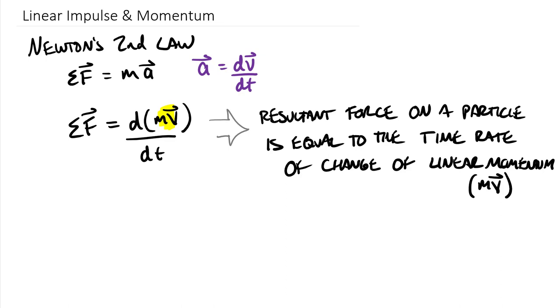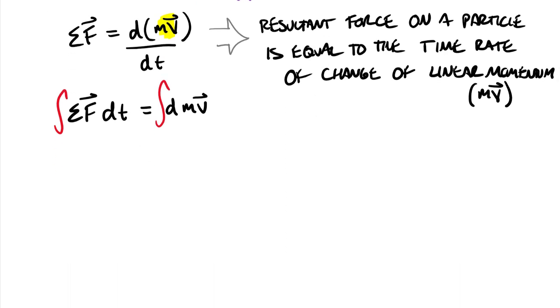So if we do separation of variables and take an integral of both sides, separation of variables looks like this: we have sum of forces as a vector bringing the dt over is equal to d(mv). And if we integrate both of these, we're left with what's called the impulse momentum equation. On the left side we have an integral from t1 to t2 of our sum of forces as a vector dt is equal to basically the change in our linear momentum, which we can write as mv2 vector minus mv1 vector.